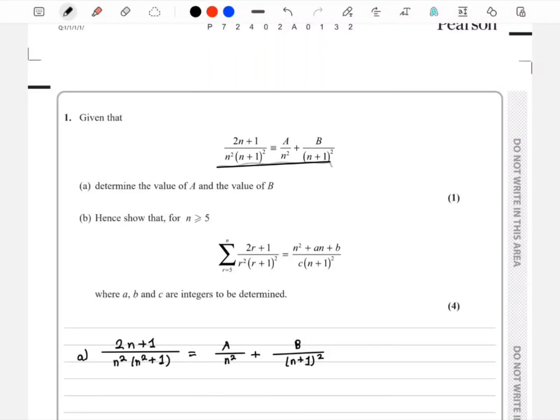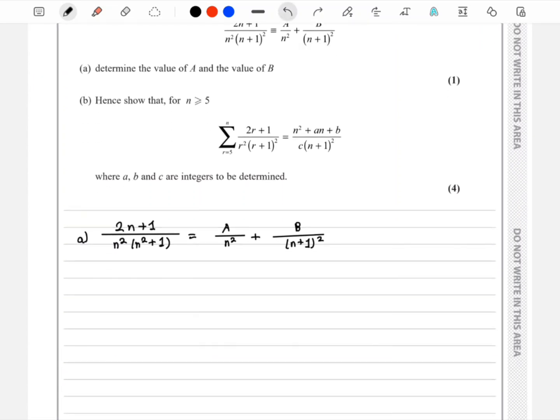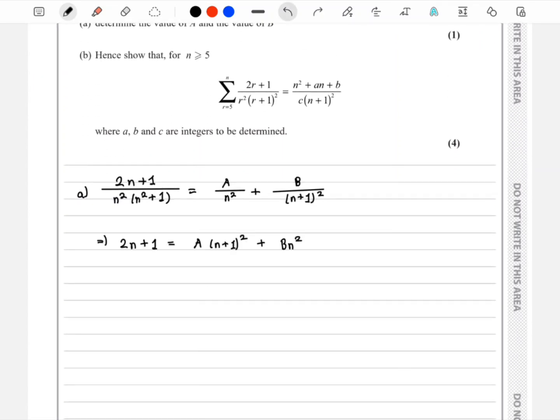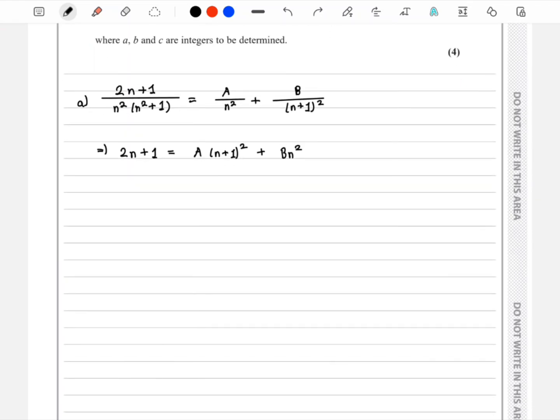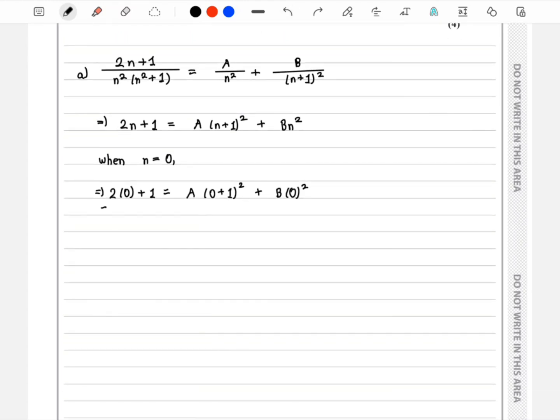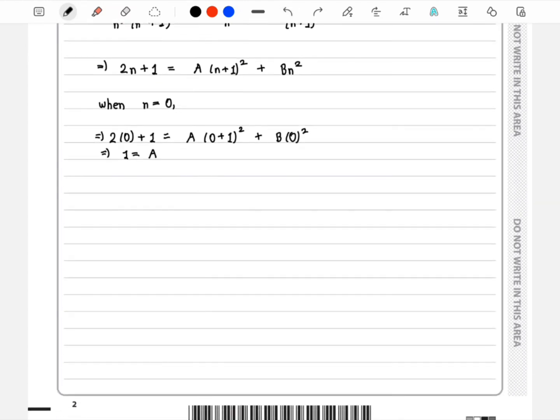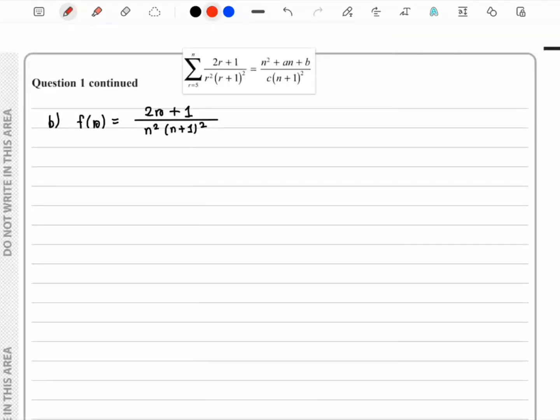For part a, we solve this using partial fractions. We multiply by n² times (n+1)² and get this line. From there, we plug in the values n equals 0 and n equals minus 1. From n equals 0 we get A, and from n equals minus 1 we get B.